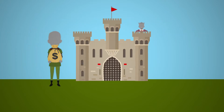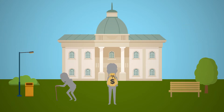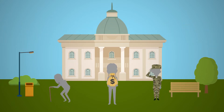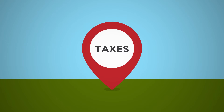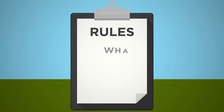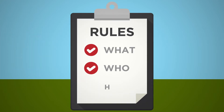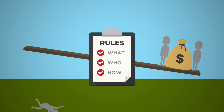People have paid taxes for thousands of years, whether to local landlords for protection or to governments to fund public services, social security and wars. But today things are a little different. Most countries have taxes, but different rules dictate how they apply them. These rules are important because what we tax, who we tax and how we tax shapes our societies, making some people rich while keeping others poor.